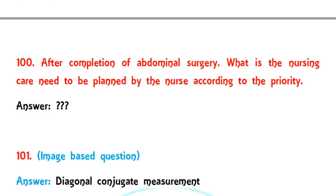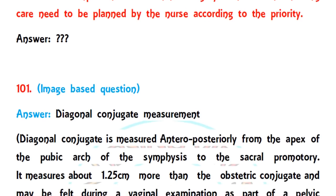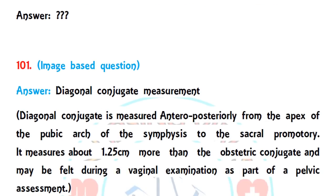Question 100: after completing abdominal surgery for the client, what nursing care needs to be planned by the nurse according to priority? They gave four options. The correct answer may be assisting the person to sit on the bed.